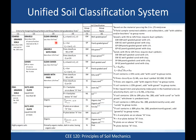Next, still using grain size, we look at how much fines content is present. If there's less than 5% fines, we have clean gravel or clean sand. If there's more than 12% fines, we call it gravel with fines. If it's between 5 and 12%, that's when you need footnote C: gravels with 5 to 12% fines require dual symbols, meaning you'll need more than one two-letter grouping to classify the soil.